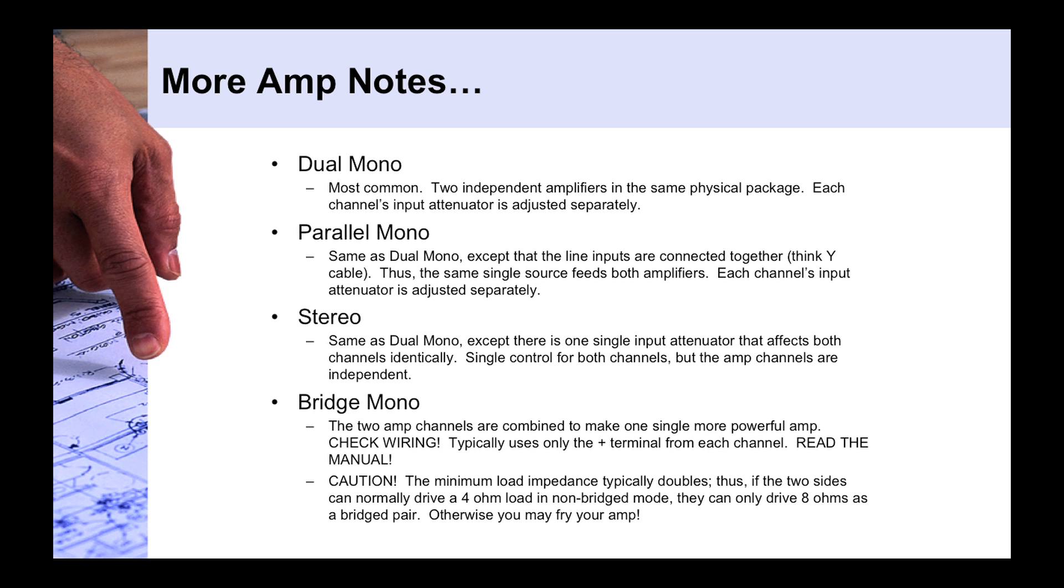The other thing to take caution of with the bridge mono mode is that if an amplifier can typically handle down to, say, 4 ohms as its minimum load impedance, it's going to double in bridge mono mode. So, if it can handle normally in a dual mono mode, if it can handle two 4 ohm loads, then in bridge mono mode it can only handle an 8 ohm load. You've got to be real careful to make sure you don't overload your amplifier in bridge mono mode.